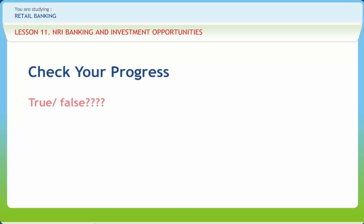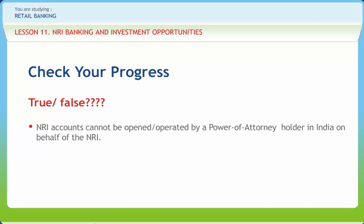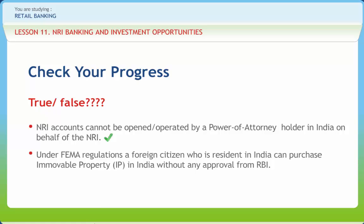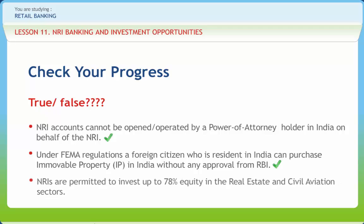Let us check if we have understood the various concepts discussed in this lesson. Question: NRI accounts cannot be opened or operated by a power of attorney holder in India on behalf of the NRI — Right or Wrong? Answer: Right. Question: Under FEMA regulations, a foreign citizen who is a resident in India can purchase immovable property in India without any approval from RBI — Right or Wrong? Answer: Right. Question: NRIs are permitted to invest up to 78% equity in the real estate and civil aviation sectors — Right or Wrong? Answer: Wrong.